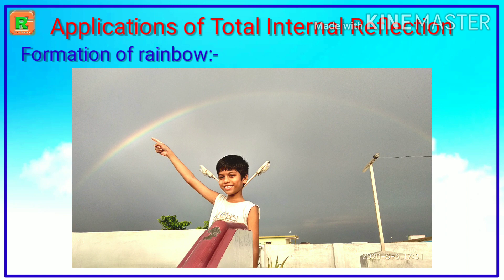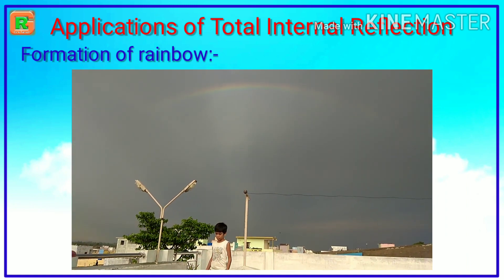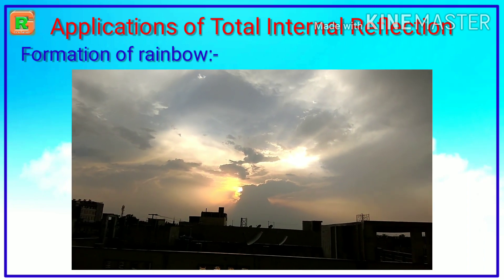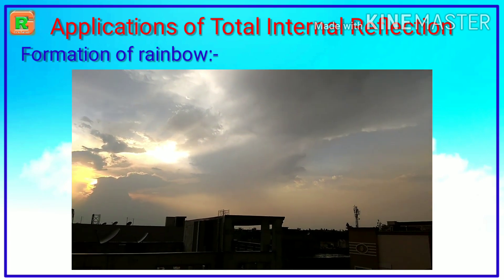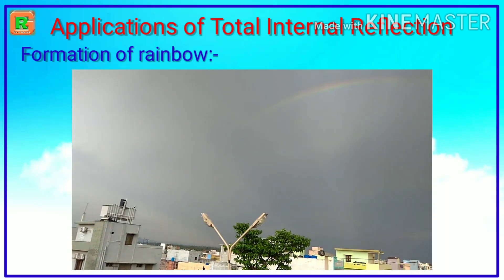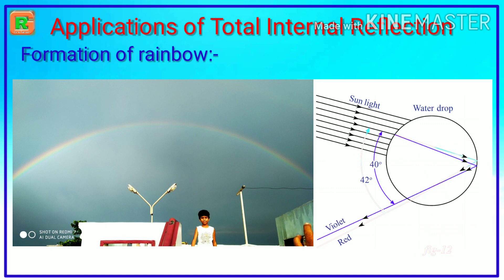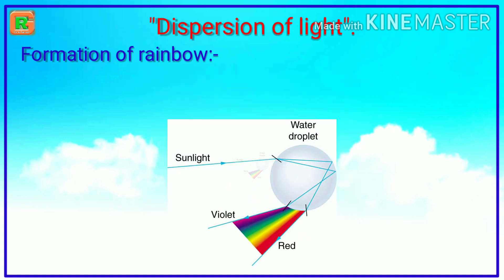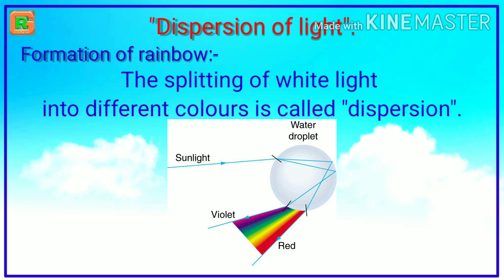Another application of total internal reflection is the formation of a rainbow. We can see a rainbow when the sun is behind us and falling rain is in front of us. After or while raining, millions of tiny water droplets are present in the atmosphere. The sunlight rays reaching the opposite side of a water drop — each light ray is reflected back into the drop because of total internal reflection. In the formation of a rainbow, there is not only total internal reflection, but also another phenomenon called dispersion of light. The splitting of white light into different colors is called dispersion of light. Watch the next video to know about the dispersion of light.